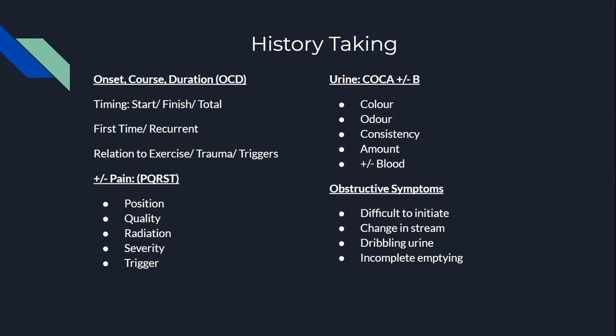Whenever talking with the patient about abnormal body secretions or fluids, make sure you ask about COCA plus/minus B. Ask about the color of the urine, odor of the urine, consistency of the urine, and amount — the patient can tell you how much: a teaspoon, cupful, tablespoon, handful. However they say it, take notice. Was there blood in the urine?